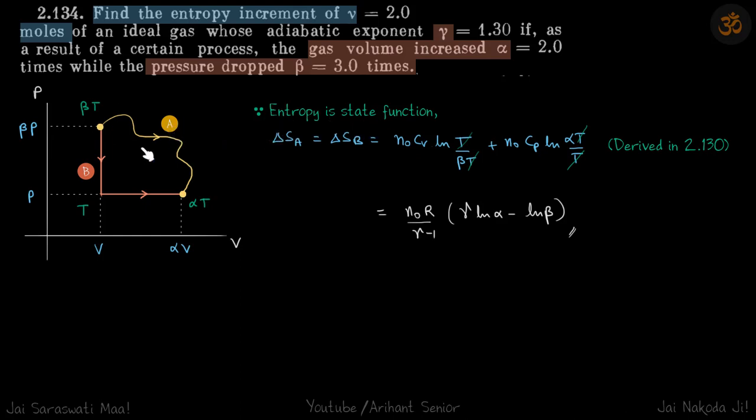Now since entropy is a state function, we can arrive at the same state by this process also. So one isochoric line and one isobaric line. So for that it will be easier for us to calculate the entropy changes, but we need to find the temperatures.